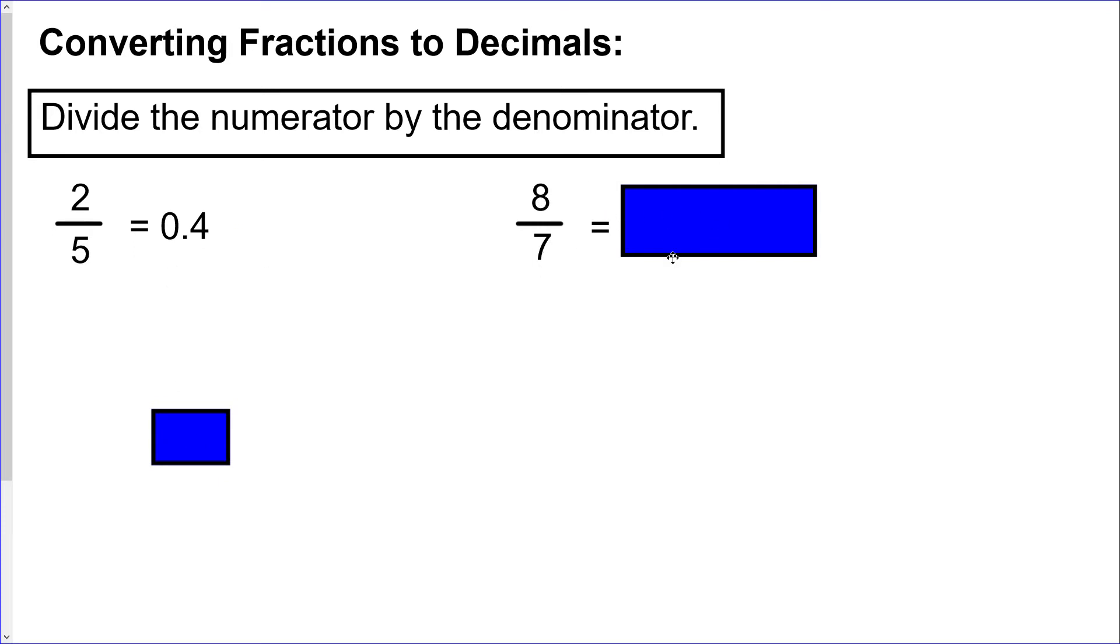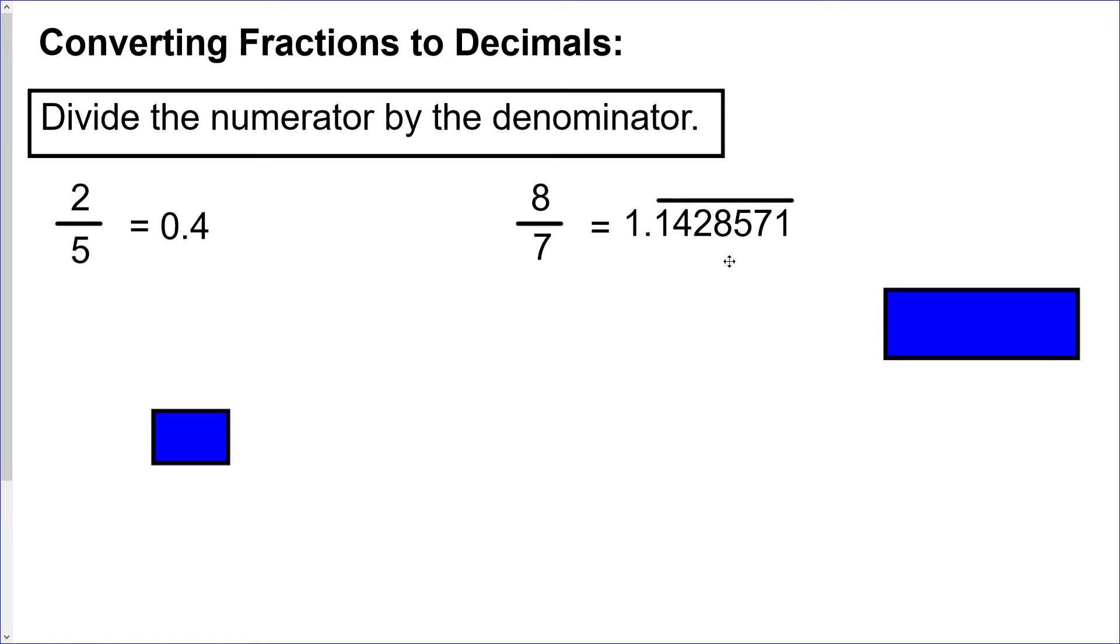8 divided by 7 is 1.1428571 repeating. I'm sure you all had that memorized. But remember the point of the rational number is that it can be expressed as a fraction of two integers. So even though the number looks bizarre, it can be expressed that way. So any repeating decimal counts.